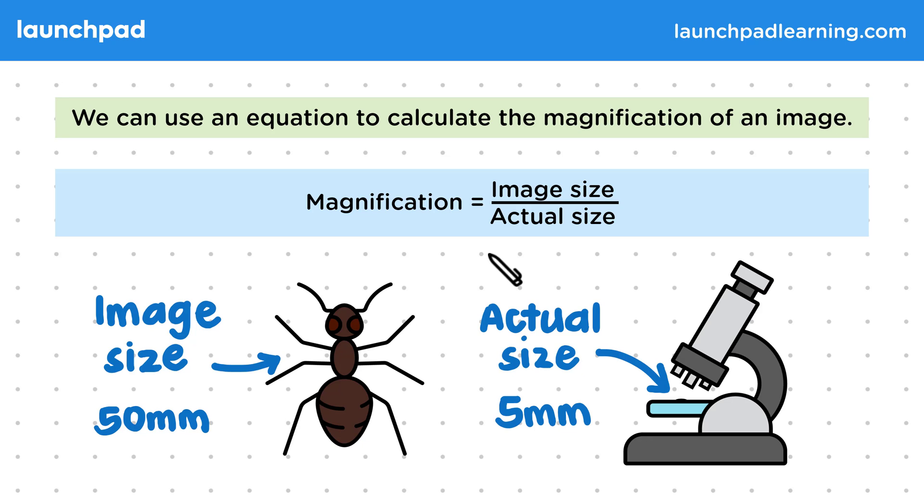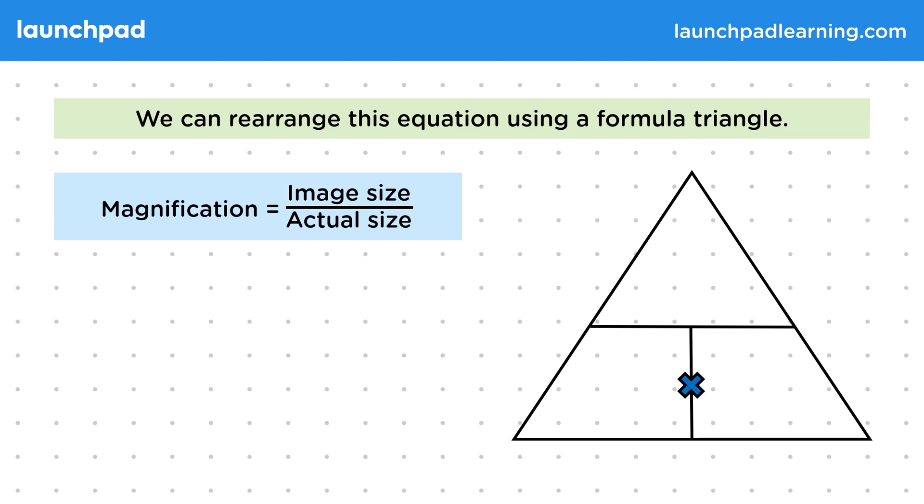So how can we rearrange this equation if we're missing one of the parts? We can rearrange this equation using a formula triangle. So we know our equation: magnification equals image size divided by actual size. Let's pop each of these elements into the formula triangle. The image size goes at the top of the triangle and then this line here is like the dividing line. Underneath we have magnification and actual size with a multiplication sign here.